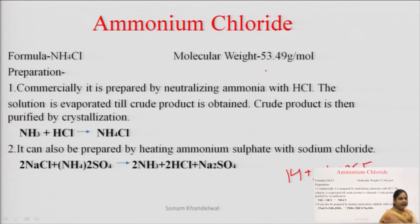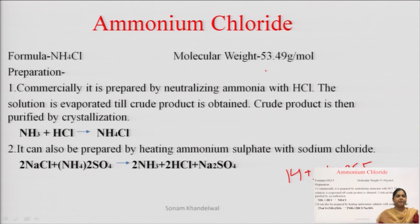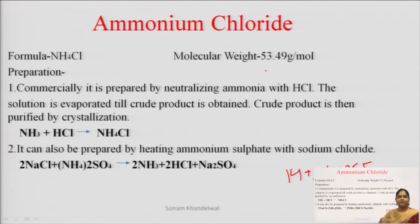Ab hum har individual compound mein padhenge ki unki preparation kya hai, unko hum kaise prepare karte hain, unke different physical properties kya hain, aur unke uses kya hain. Sabse pehle hum ammonium chloride ka padhenge. Large-scale preparation, we call it commercial preparation — commercially what we prepare is ammonium chloride: we neutralize hydrochloric acid, then we evaporate it, we heat it, then we get a crude product, and we purify it with crystallization.